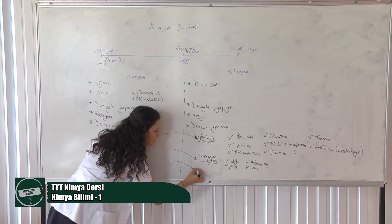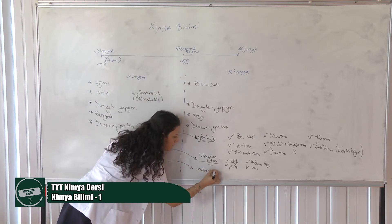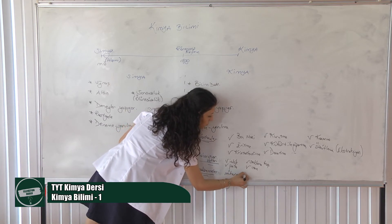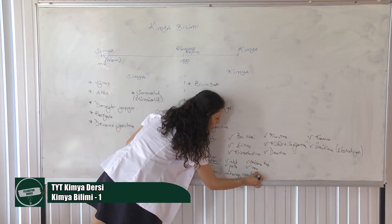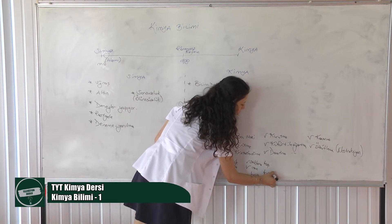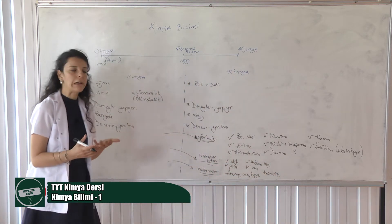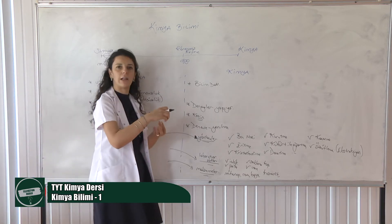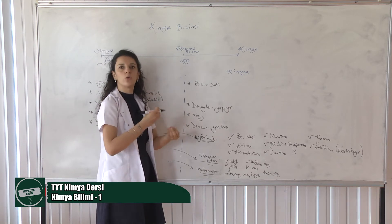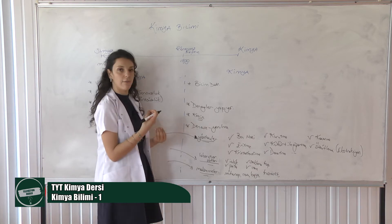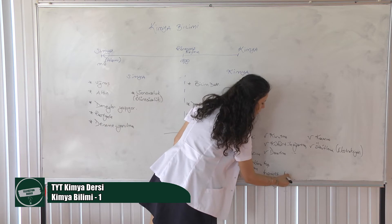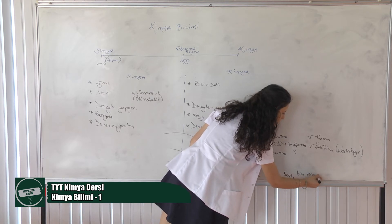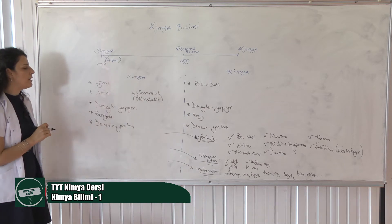Bir diğer durumda simyanın kimyaya kattığı malzemeler. Malzemeler çok fazla: mürekkep, cam, boya, sonra kozmetik. Kozmetik derken bugünkü markalar değil — o zamanlarda insanlar bitkilerin özütlerinden koku, sürme veya tedavi amaçlı şeyler elde etmişler. Boya, bira, şarap... Farklı farklı simyanın kimyaya kattığı malzemeler gerçekleşmekte.